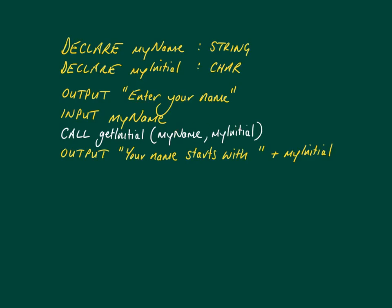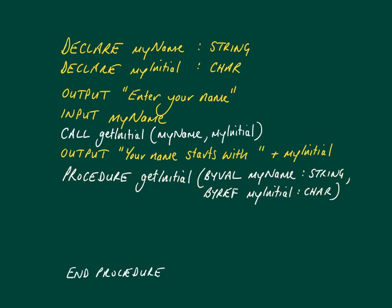Let's create the stub for the procedure. We've got our procedure stub with the identifier 'get initial', but this time we've got 'by val' and 'by ref' involved. The actual parameters need to be described to the procedure so it knows what it can do with them. 'By val' means you're taking essentially a copy of what's being passed in. You can make changes to the variable 'my name' inside the procedure, but when it reaches the end of the procedure, that copy gets destroyed. So any changes you make to 'by val' variables are lost when 'end procedure' is encountered.